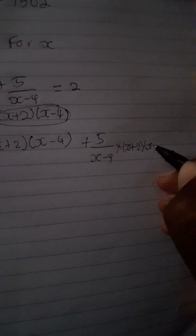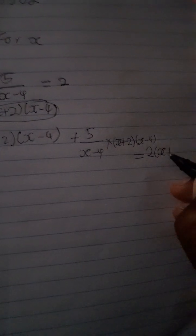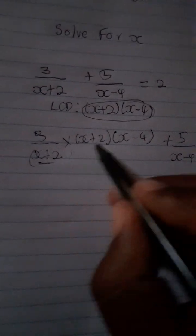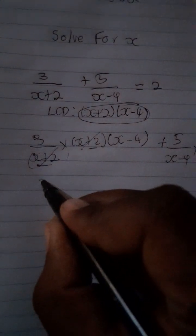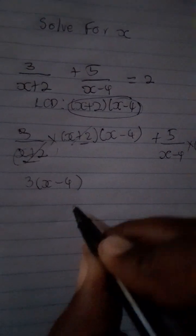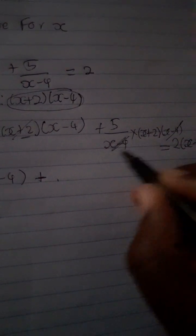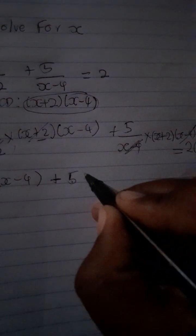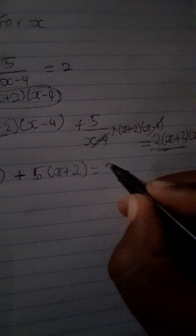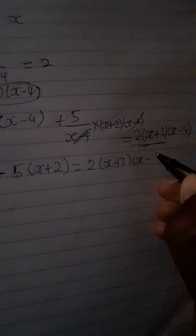For the second fraction, 5 divided by (x − 4), also multiply by the LCD (x + 2)(x − 4). On the right-hand side, the 2 is also multiplied by the full LCD, (x + 2)(x − 4). Now we cancel similar parts: (x + 2) cancels with (x + 2), leaving 3(x − 4). Then (x − 4) cancels with (x − 4), leaving 5(x + 2).